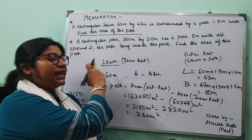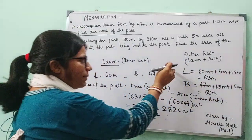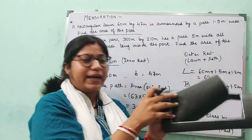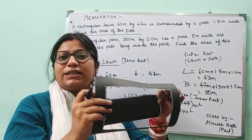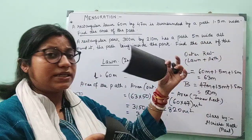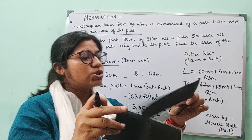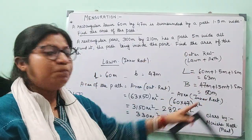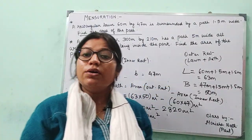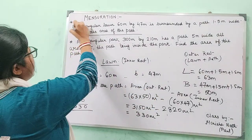To summarize: if the inner dimensions are given and you need to find the outer dimensions, you add 2 times the width to the inner dimensions. For the area of the path, you subtract the area of the inner rectangle from the area of the outer rectangle — where the inner rectangle represents the lawn and the outer rectangle represents the lawn plus the path.